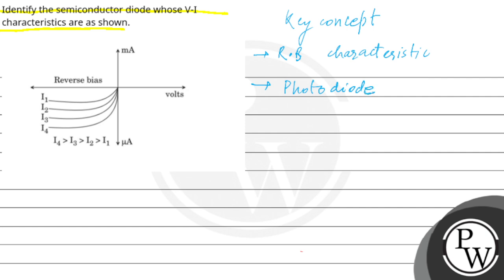So in this question, we have given a graph and we have to tell which semiconductor diode is shown in the graph.